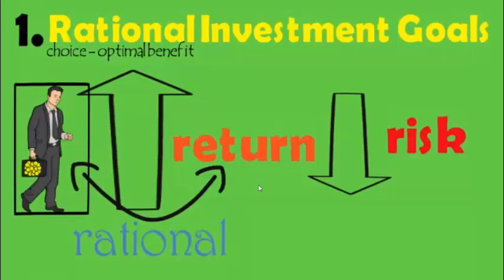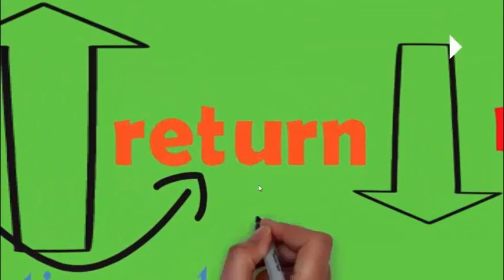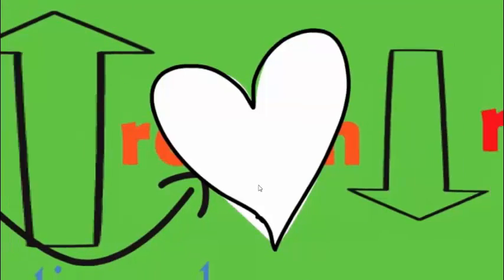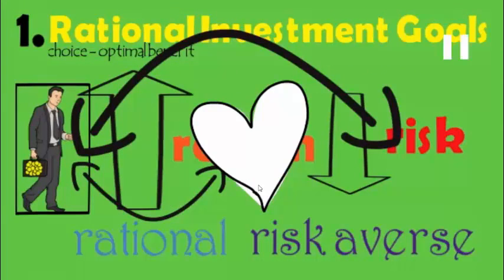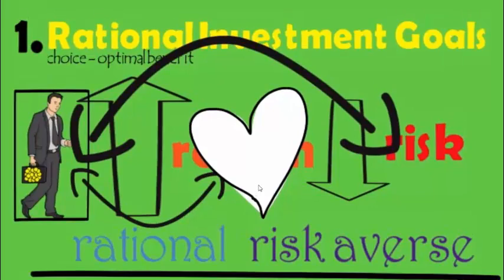So what is the first assumption of CAPM? That investors are return lovers and they are rational towards return. That is, they love return and they hate risk, that is they are risk averse. They have the rational investment goals.